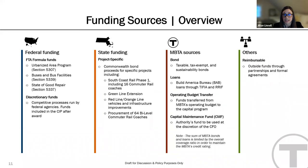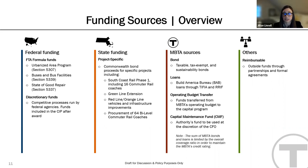The third type of funding are MBTA sources. This includes bonds — broadly taxable, tax-exempt, and sustainability bonds — made available each year to support the capital program. A second component are Build America Bureau loans, which the MBTA can pursue to support large, federally eligible capital projects through two programs: TIFIA (Transportation Infrastructure Finance and Innovation Act) for transit projects, or RRIF (Railroad Rehabilitation and Improvement Financing Program) for railroad infrastructure. Additional MBTA sources include operating budget transfers and the capital maintenance fund.